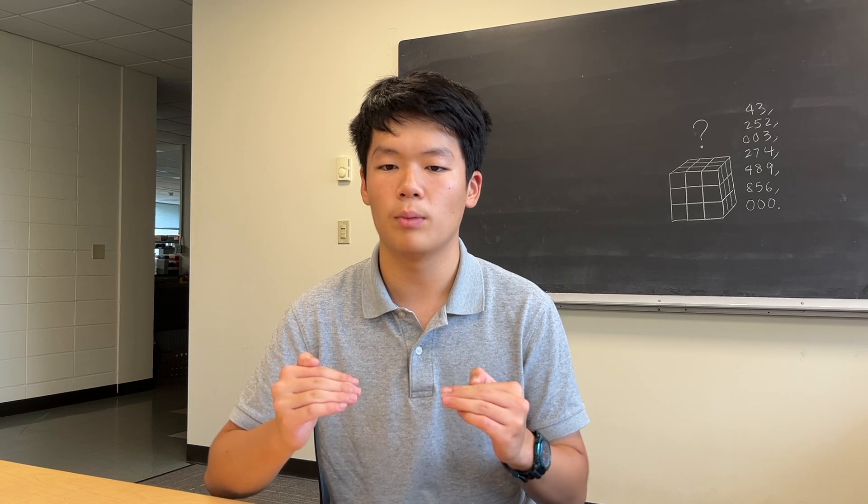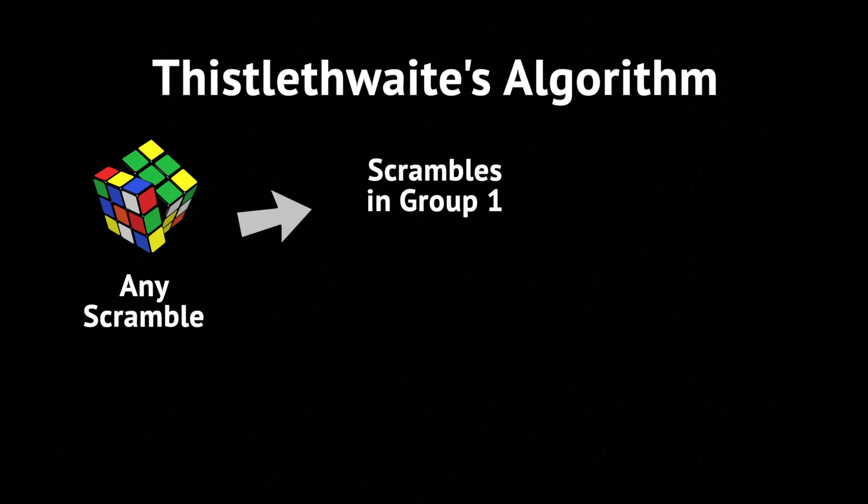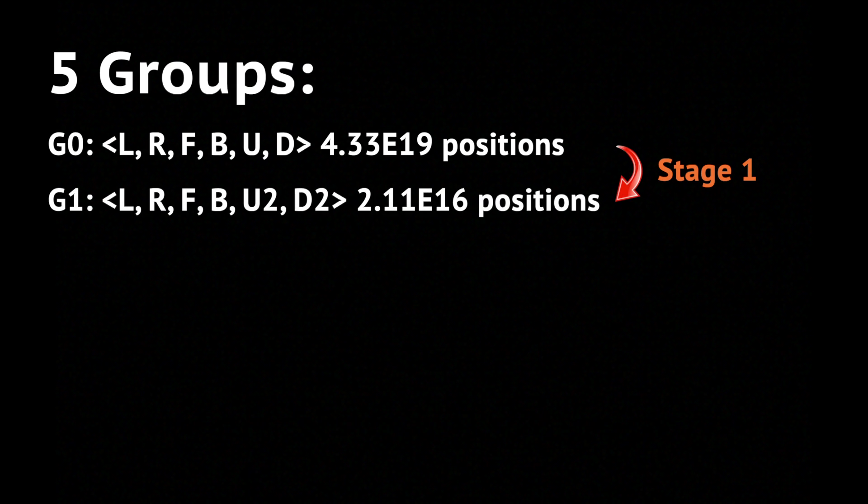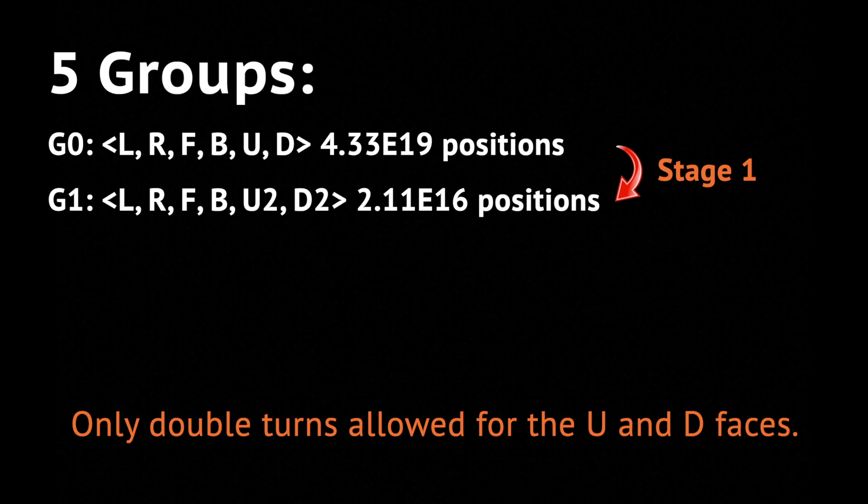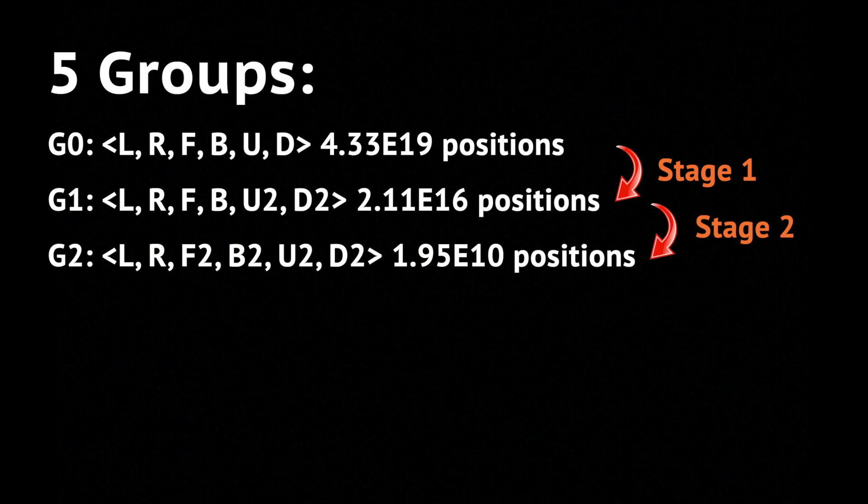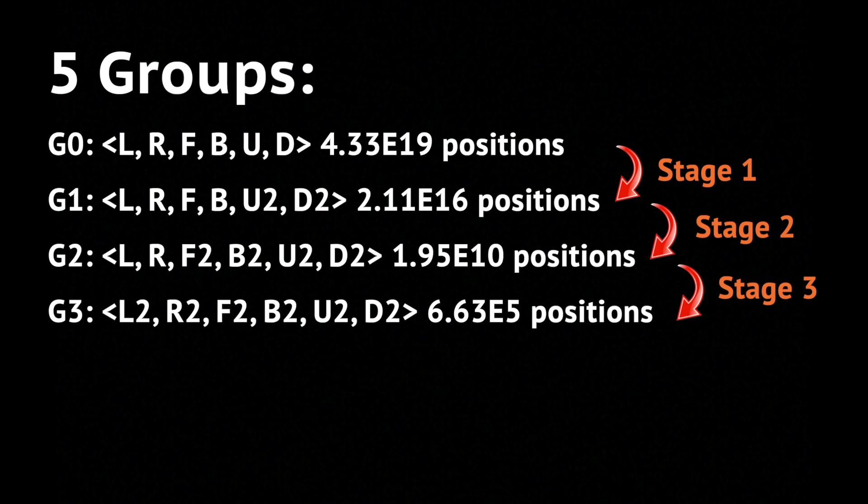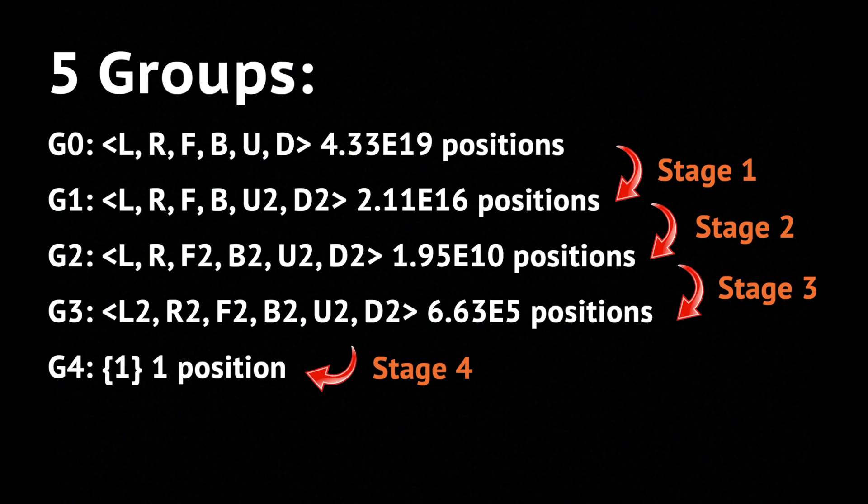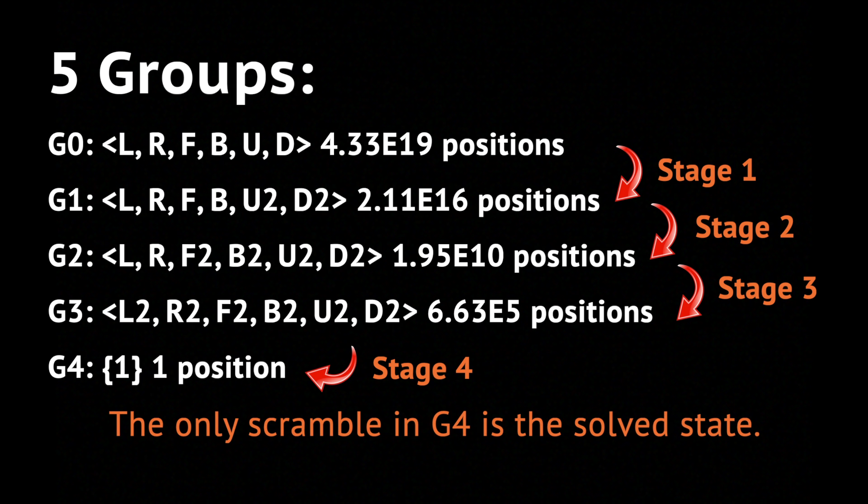He attempted to divide this giant problem into several sub-problems. His algorithm works by restricting the scrambles into a subgroup series of scrambles that can be solved using a certain set of moves. He created five groups, G0, which contains the moves L, R, F, B, U, and D. This group contains all possible positions of the Rubik's cube. G1 contains the moves L, R, F, B, U2, and D2, which means for the U and D faces, only double turns are allowed. Positions in G1 can be solved using only these moves. G2 contains the moves L, R, F2, B2, U2, and D2. Positions in G2 can only be solved using these moves as well. And G3 contains the moves L2, R2, F2, B2, U2, and D2, meaning that positions in G3 can be solved using only double turns. And then, going from G3 to G4, we only use these double turns and solve the cube into the solve position, which is only one position.